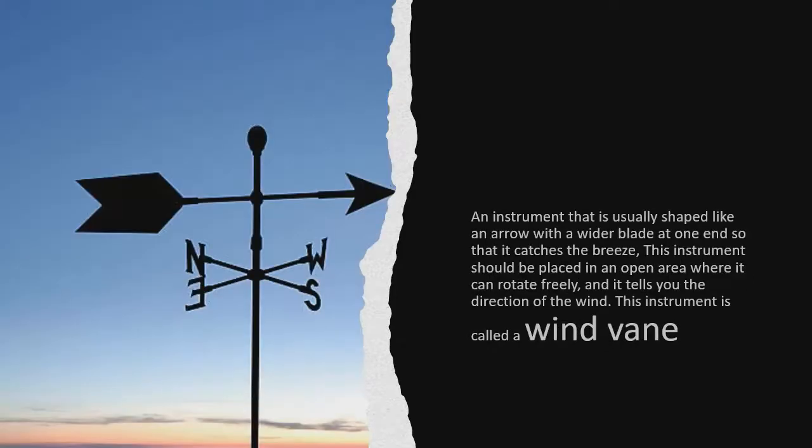An instrument that is usually shaped like an arrow with a wider blade at one end so that it catches the breeze. This instrument should be placed in an open area where it can rotate freely, and it tells you the direction of the wind. This instrument is called a wind vane.